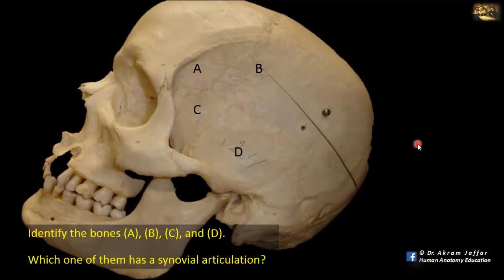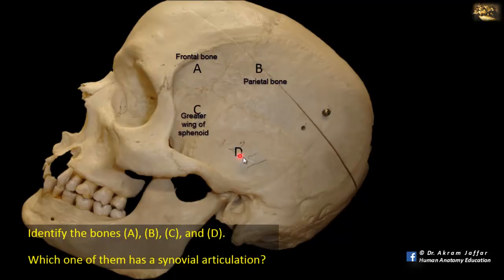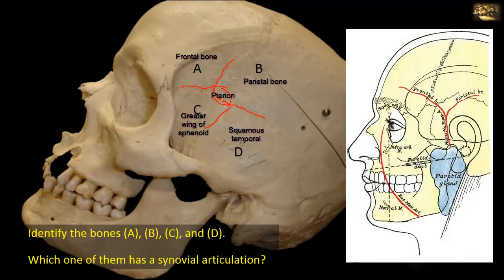Identify the bones A, B, C, and D. Which one has a synovial articulation? This is a lateral view of the skull showing the frontal bone A, parietal bone B, greater wing of the sphenoid C, and squamous part of the temporal bone D. These four bones unite in a capital H-shaped articulation; the horizontal bar is the region called the pterion, which marks the location of the anterior branch of the middle meningeal artery on the inside of the skull.